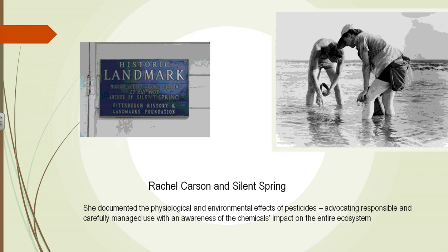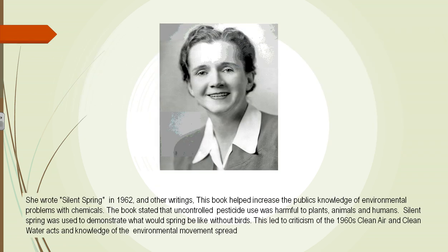Rachel Carson was one of the first people to gain national prominence on these issues. She developed many ways to show that pesticides were harming the environment, and she advocated for responsible, carefully managed use — she did not say we needed to get rid of chemicals entirely. She came before Congress and showed the damage being done to birds. Her book 'Silent Spring,' published in 1962, quickly became a bestseller. It showed that uncontrolled pesticide use was especially harmful to birds, weakening their eggshells so eggs were not strong enough to contain their young. The title illustrated what would happen if we had a spring without birds.